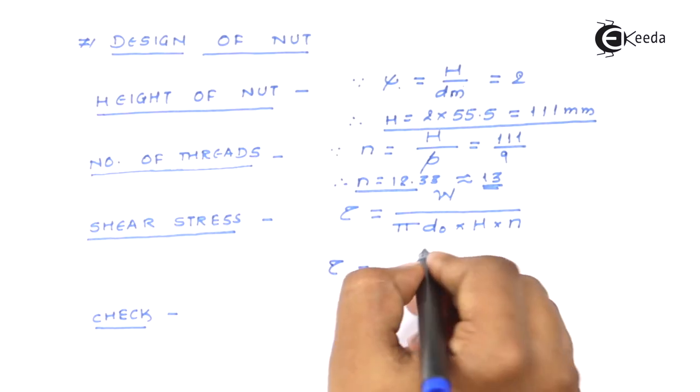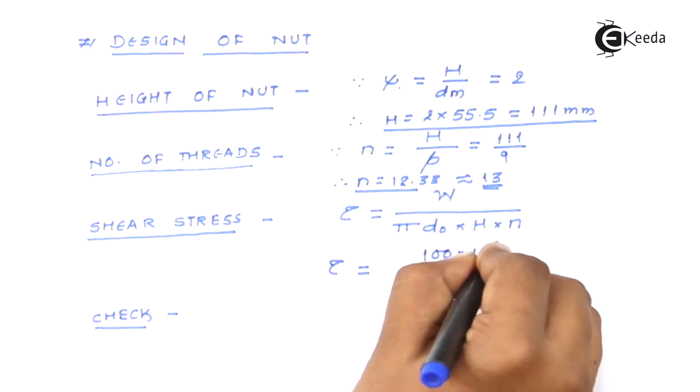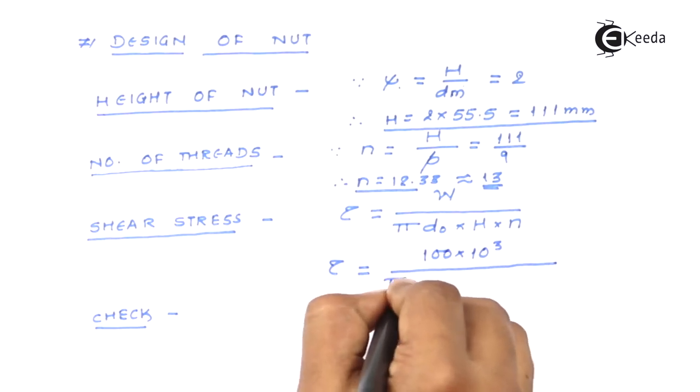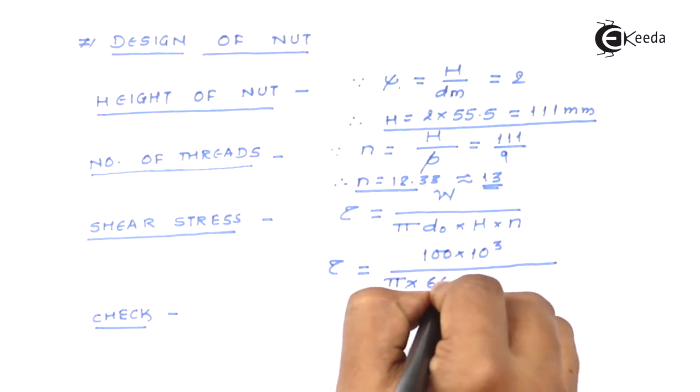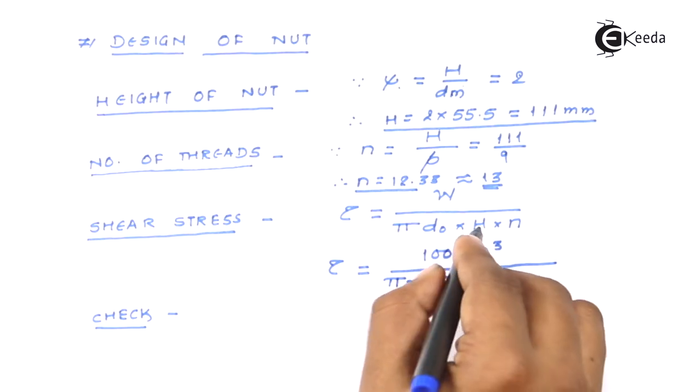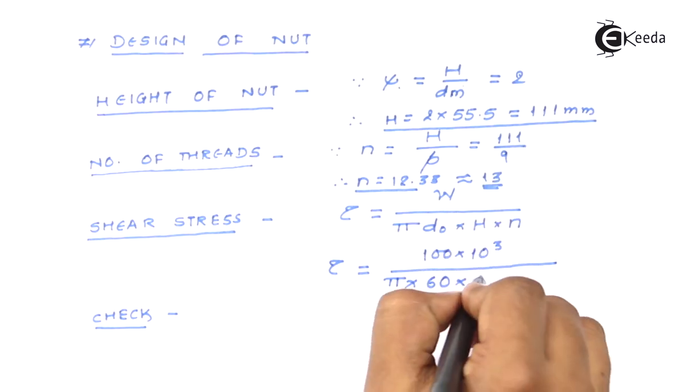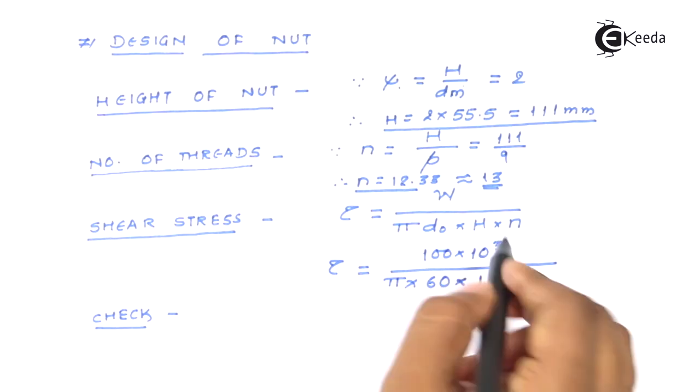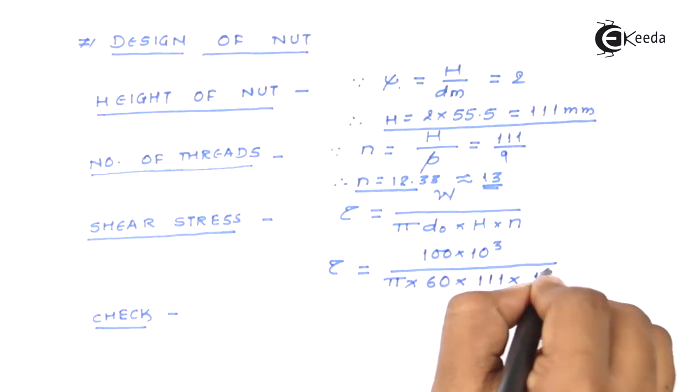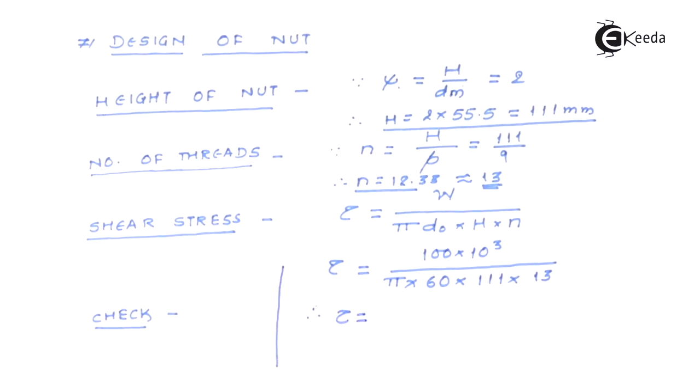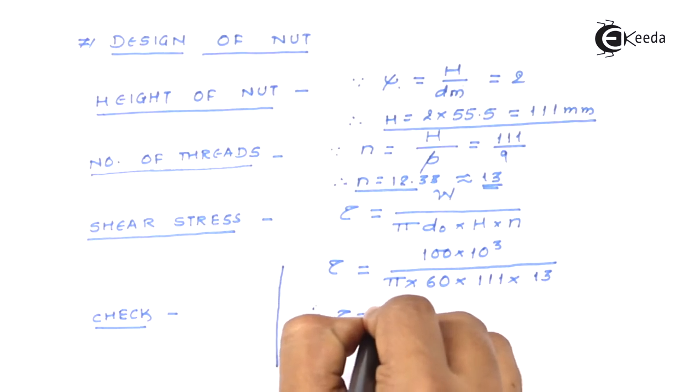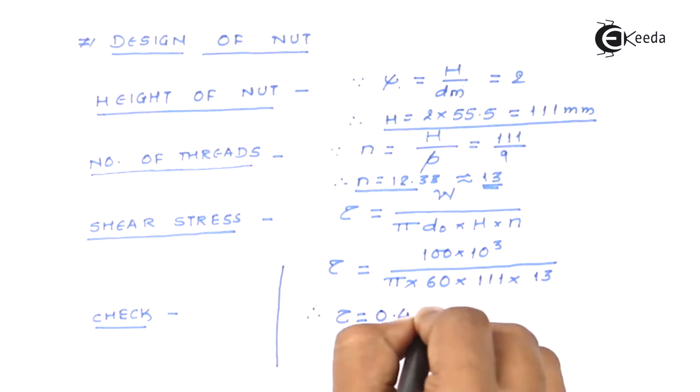It is given by this ratio. The d outer which is nominal diameter is already known 60, the height of nut is already known 111, and number of threads 13. So the tau value comes out somewhere around 0.4 newton per millimeter square.